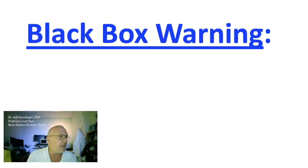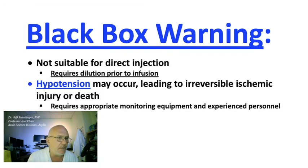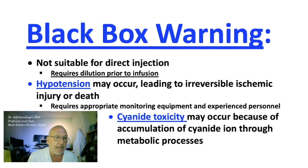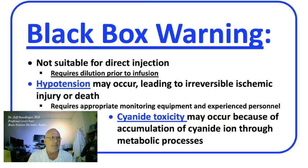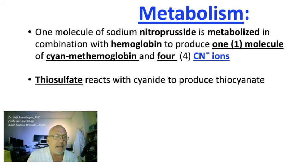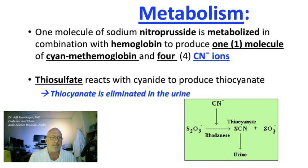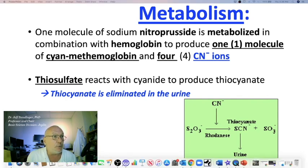There is a black box warning associated with this drug. It is not suitable for direct injection — it requires dilution before infusion. Hypotension can occur, requiring appropriate monitoring equipment and experienced personnel, because of cyanide toxicity which accumulates through metabolic processes. Sodium nitroprusside is metabolized in combination with hemoglobin to produce one molecule of cyanmethemoglobin and four cyanide ions. Thiosulfate reacts with cyanide to produce thiocyanate, which is then eliminated in the urine. This is why patients with compromised renal function are at increased risk for thiocyanate toxicity.